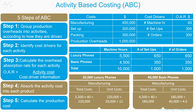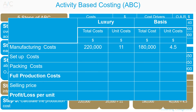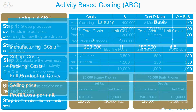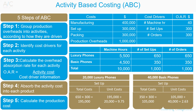For manufacturing of basic phones: take the 4,500 machine hours, multiply by the overhead absorption rate of $40, then divide by 40,000 units to get the per unit cost. For the setup of basic phones: multiply by the overhead absorption rate for setup costs of $300, then divide by the number of units produced.